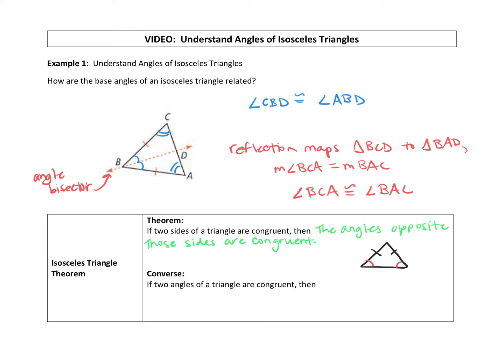The converse of this: If two angles of a triangle are congruent, then the sides opposite those angles are congruent. So the converse just works backwards from the theorem. If you start with congruent angles, then you can conclude that the sides opposite each angle will be congruent.